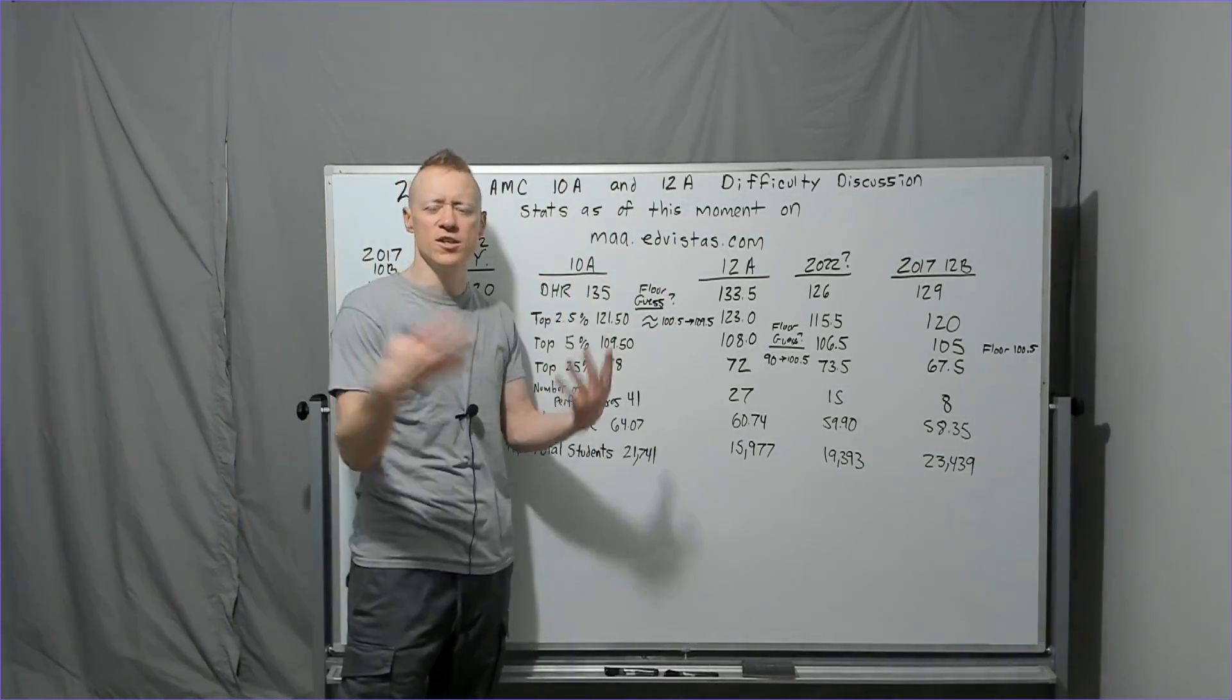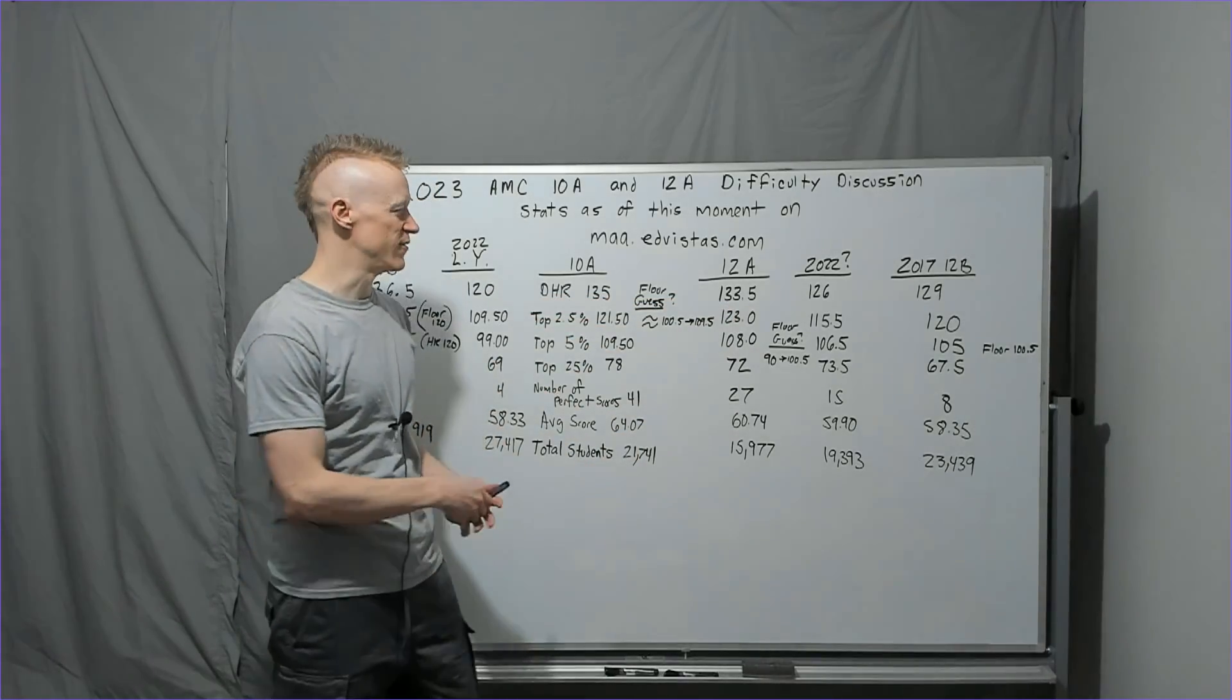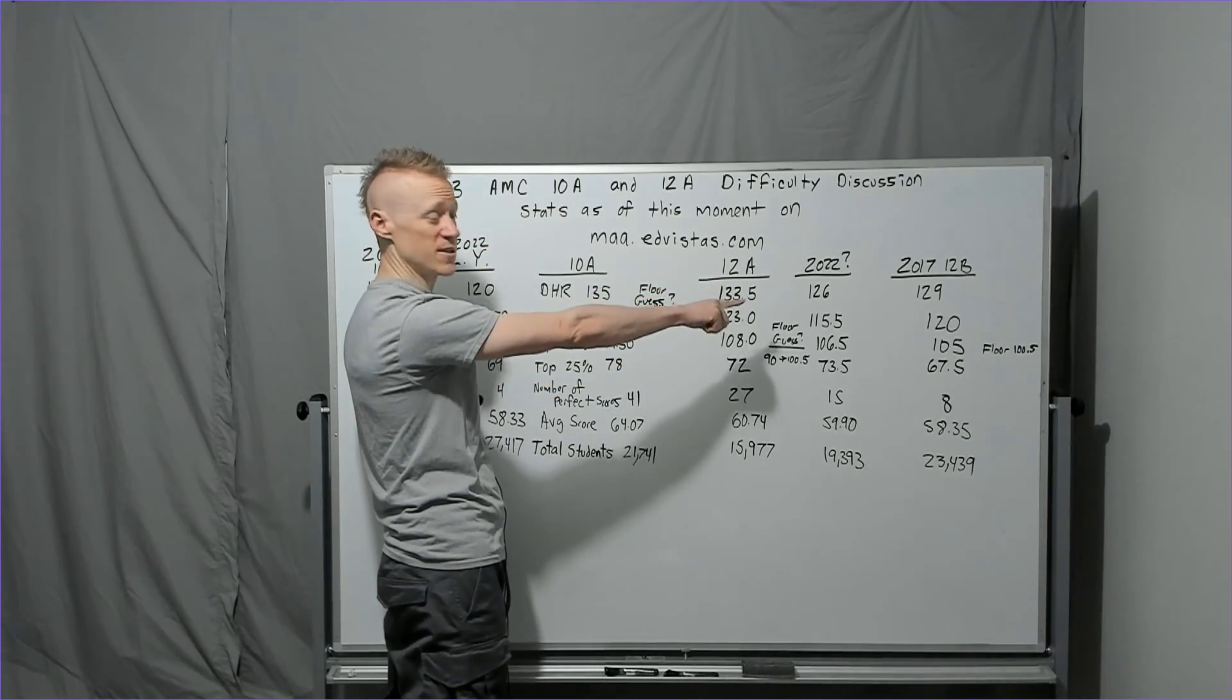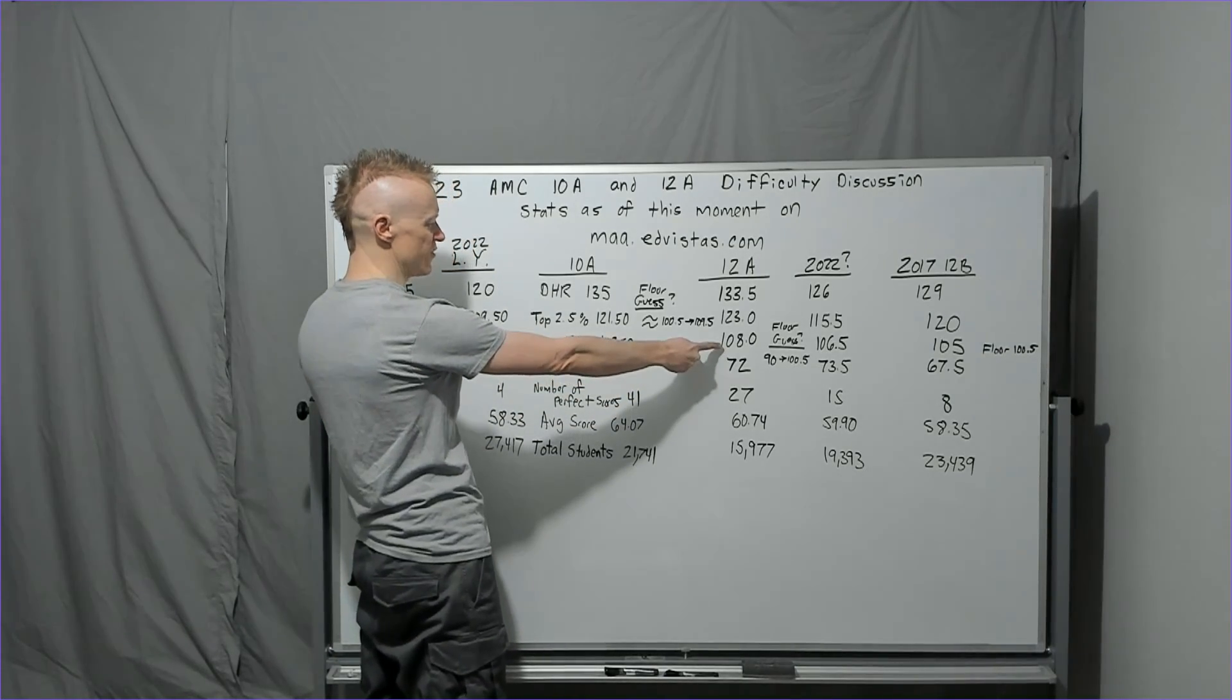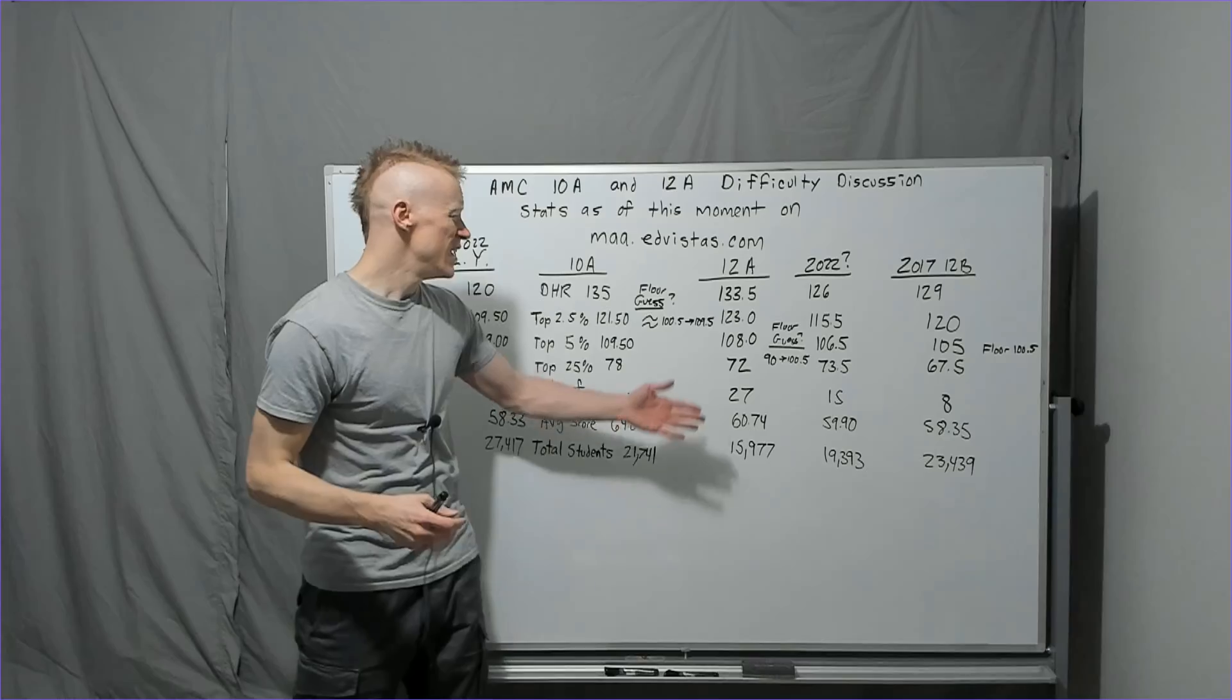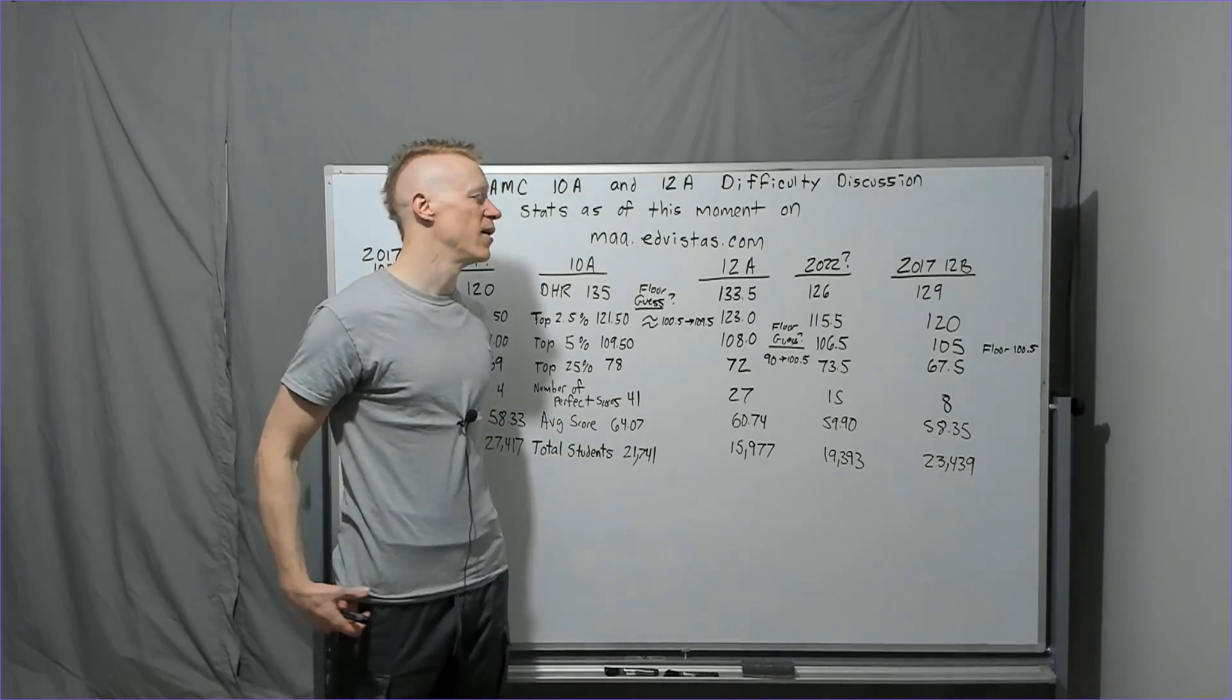It's confirmation that our worst suspicions have come to fruition, really? Let's see what's really going on here. The 12A, you're going to see that the DHR is currently at 133.5, that's top one percent. This is top five percent on the edvistas website. You've got 108 as the top five percent, 72, 27 perfect scores, average score of 60.7 and this many students have taken it as of 4 AM.